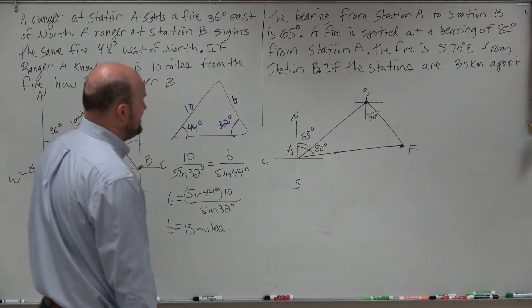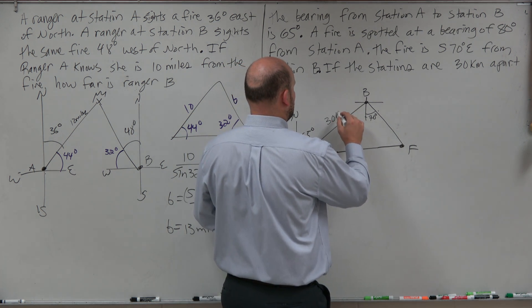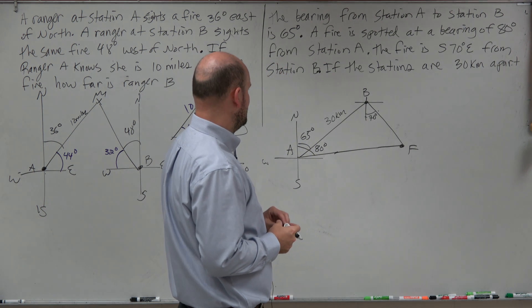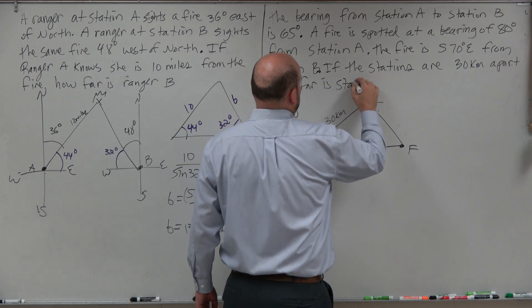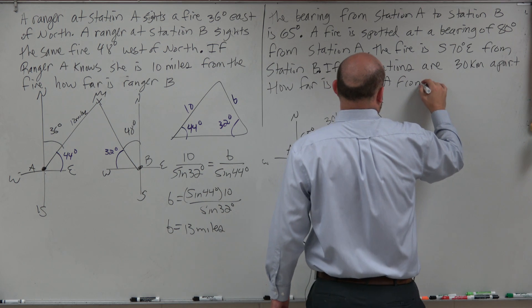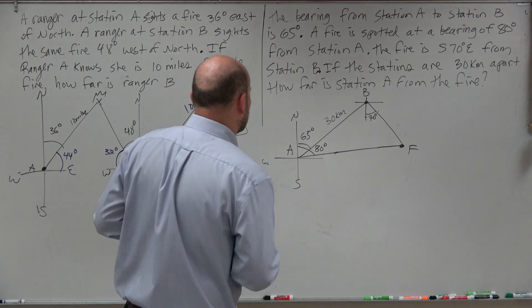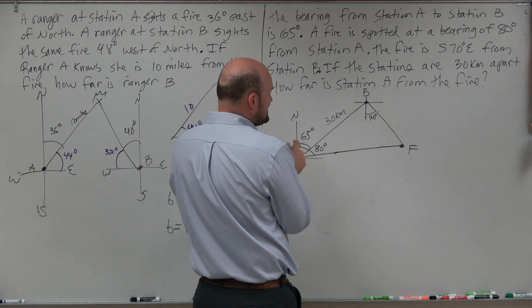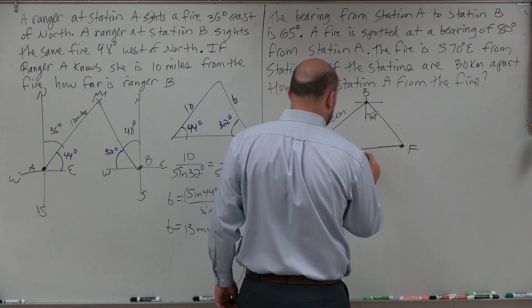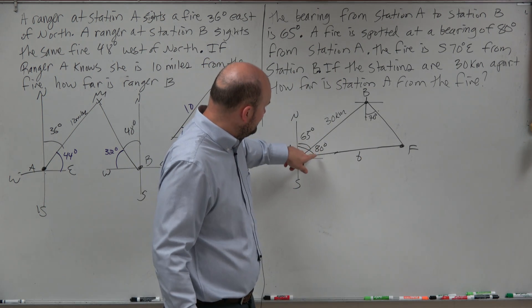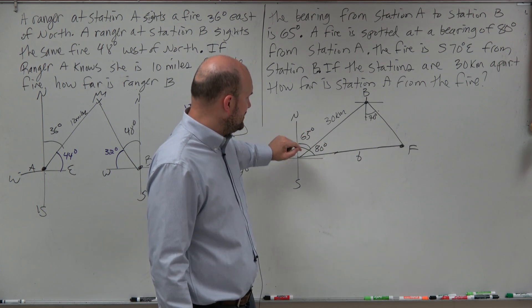If the stations are 30 kilometers apart, so from A to B is 30 kilometers. How far is station A from the fire? So that means I need to go ahead and figure out what this length is. I'm going to call this little b. Now, the problem is I need to figure out what these angles are.